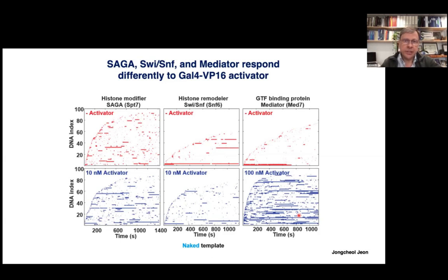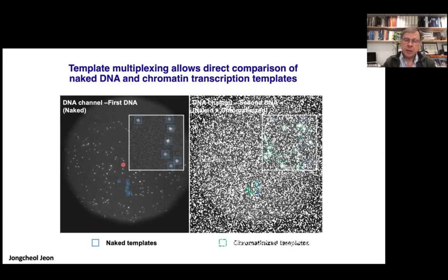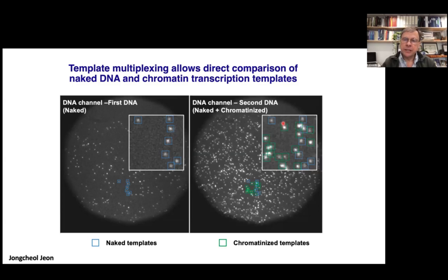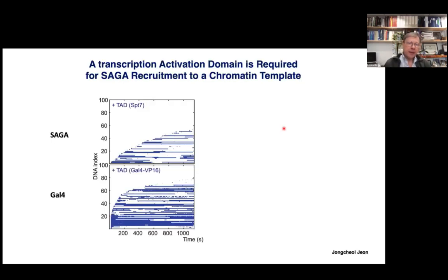So depending on the coactivator, we see effects on the on-rate, the off-rate, or sometimes both. This is all on naked DNA, which is not the physiological template. John Chul developed a beautiful system where we can compare naked and chromatin templates on the same slide. We flow in naked DNA templates first, map them, then flow in the same template assembled with recombinant histones using the ISWI assembly system — generally about three nucleosomes per DNA template.